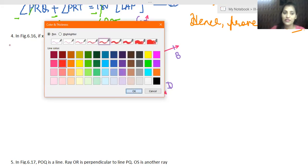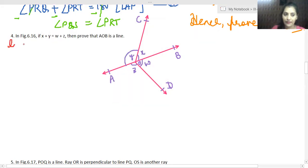First of all, just write down given. What is given to you? Given is x plus y is equal to w plus z. Let's call this equation one. Next, yes, AOB which is the line, we have to prove this.